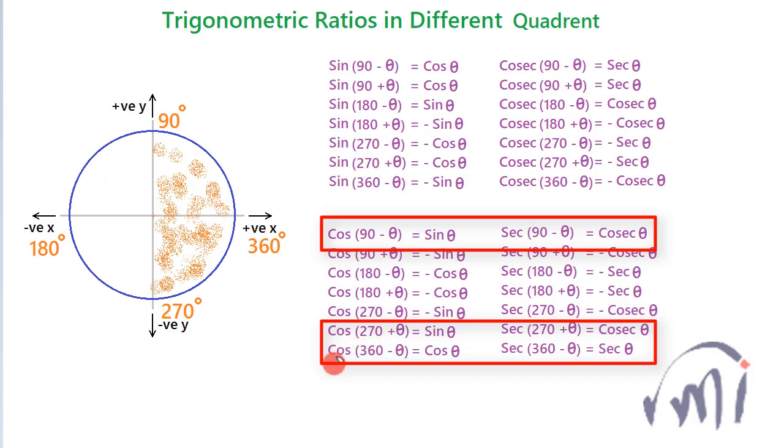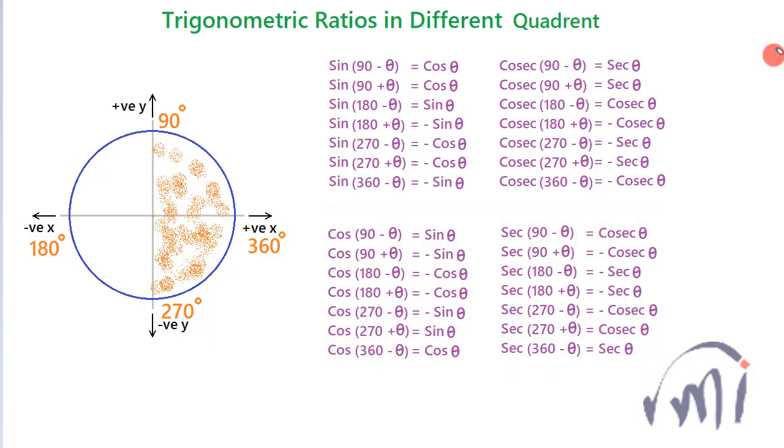For all these values, the value of cos θ is always positive. And what about tan and cot?